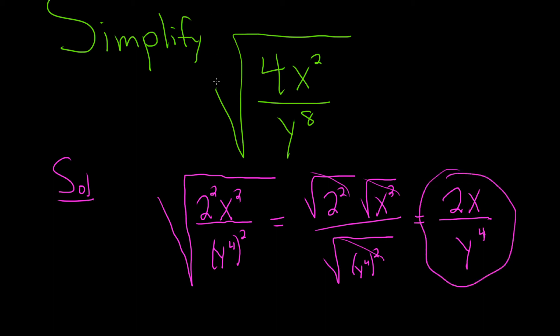So again, the goal is whenever you have a square root, you want to write everything as something squared. And the square root will get rid of the squared pieces, just like it did in all three cases here. I hope this video has been helpful.